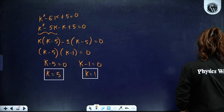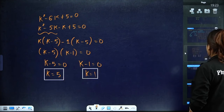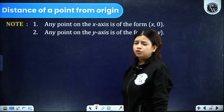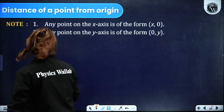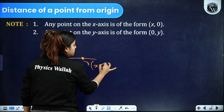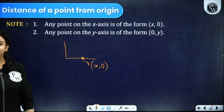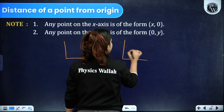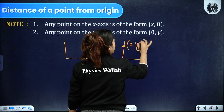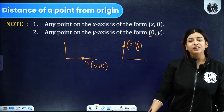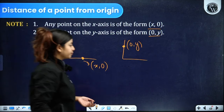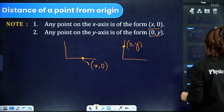Important note: any point lying on the x-axis has coordinates of the form (x, 0) — the y-coordinate is 0. Any point lying on the y-axis has coordinates of the form (0, y) — the x-coordinate is 0. Remember this for certain types of questions.